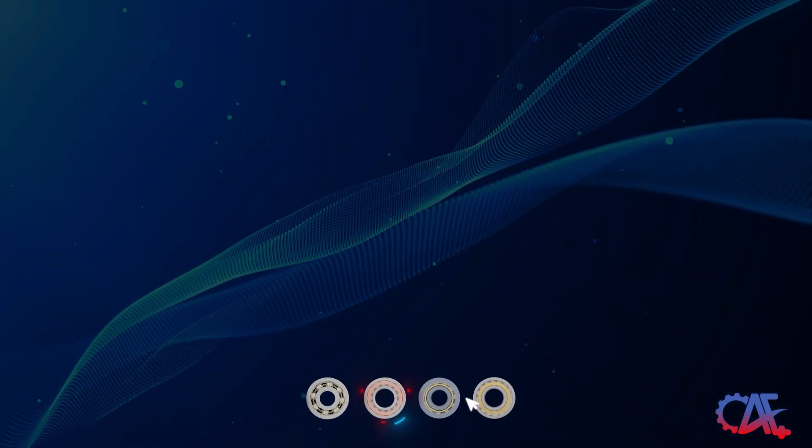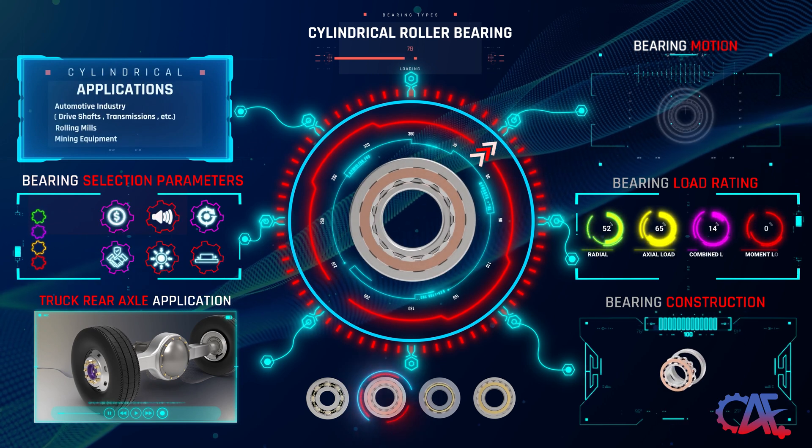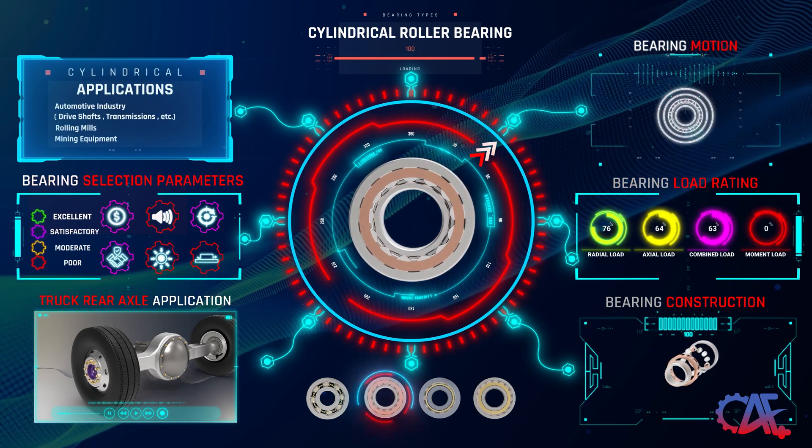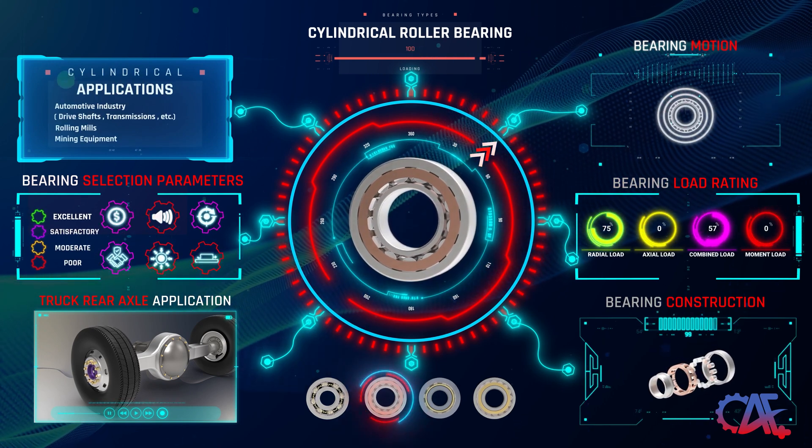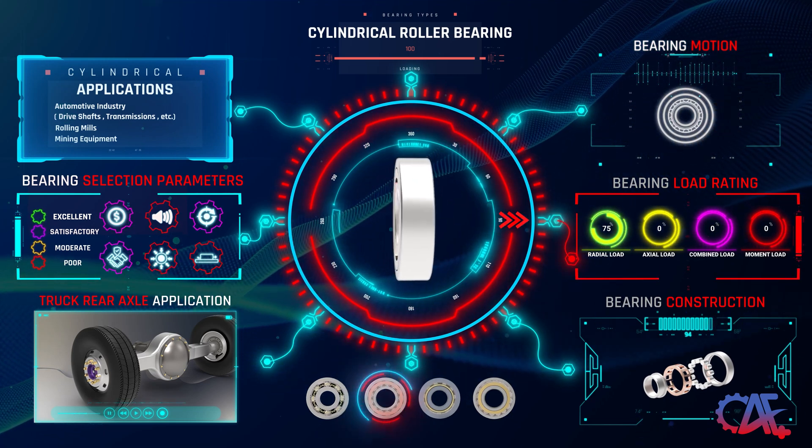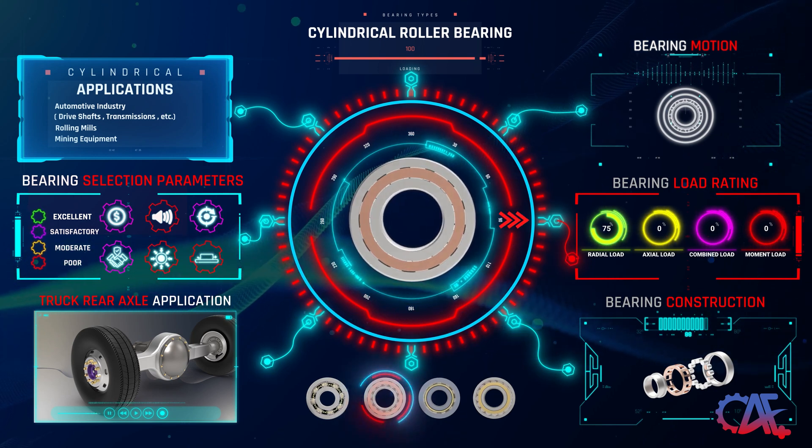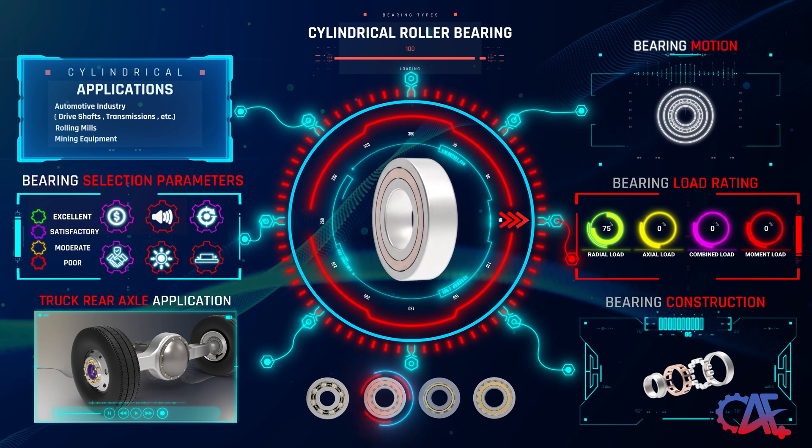Now, let's choose a bearing from the roller bearing family. A primary subtype in this category is the flat cylindrical roller bearing. These bearings excel in withstanding large radial loads, making them an ideal choice for machinery subjected to significant radial forces. However, they cannot handle axial loads and, as such, are not designed for combined forces.